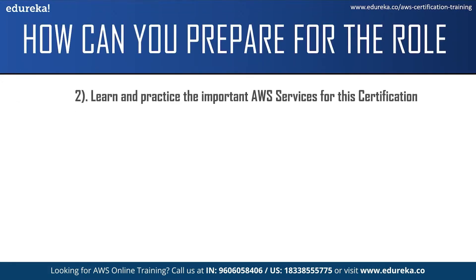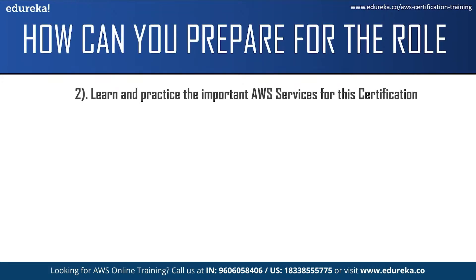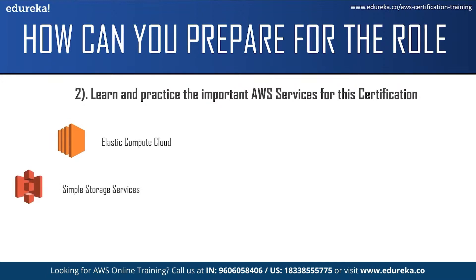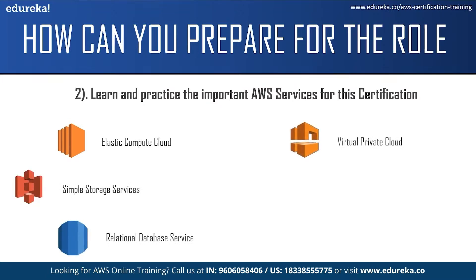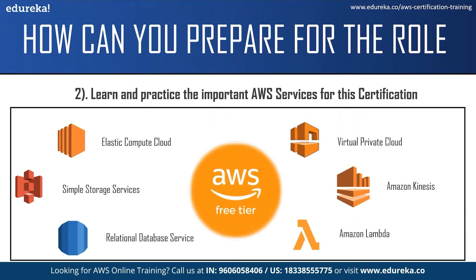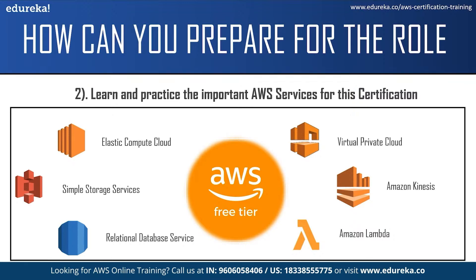The next step is learning and practicing the important AWS services for the certification. Some of the key services are Elastic Compute Cloud, Simple Storage Service, Relational Database Service, Virtual Private Cloud, Amazon Kinesis and Amazon Lambda. You can practice some of these services using an AWS free tier account, which allows you to access over 85 AWS services for free by submitting the required information.